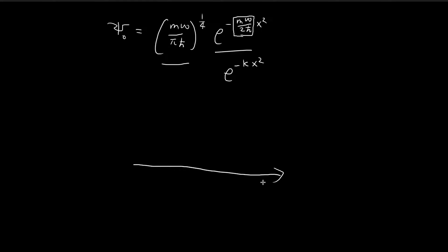So what is this graph going to look like? Notice that this graph is always going to be above the x-axis — it is always positive. If you substitute numbers from negative infinity to infinity, you'll see that this is always positive. As x tends to infinity, this expression will tend to zero, because e to the power of negative infinity tends to zero. The same goes for negative infinity, because this is a square, so it just becomes positive infinity again, and the graph also tends toward zero on the left-hand side.